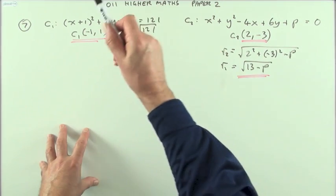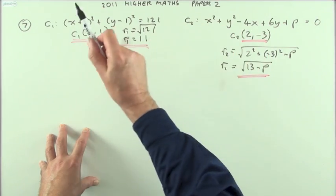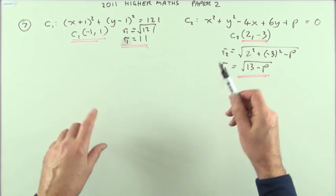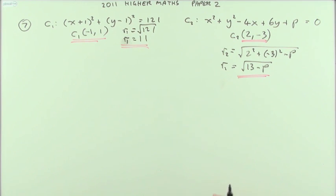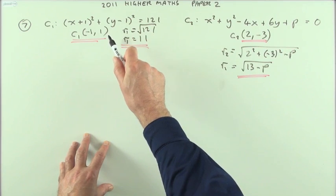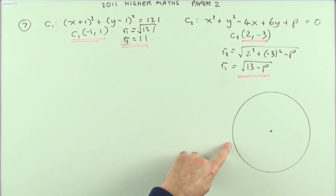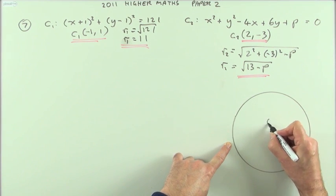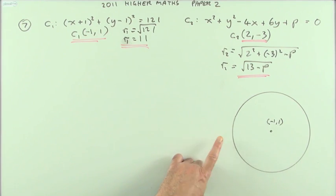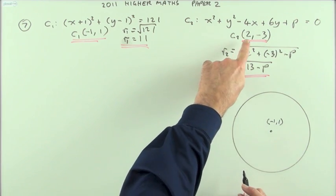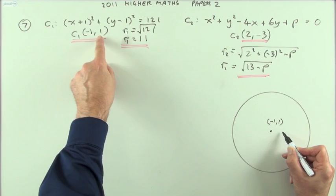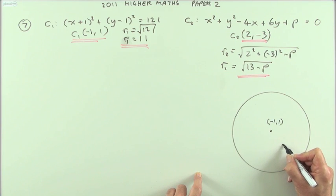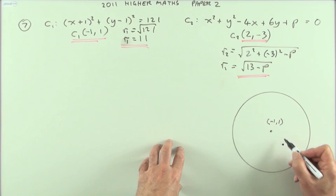That's the first part: from the two equations, get the center and radius for each circle. Then draw a sketch to see exactly what's happening. The small circle sits inside the large one. Circle 1 has center (−1, 1) and radius 11. Circle 2 has center (2, −3). Going from (−1, 1) to (2, −3) means moving 3 in the x-direction and 4 down in the y-direction.